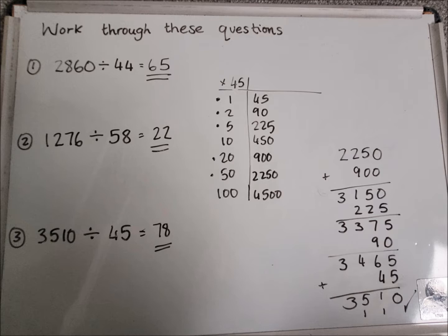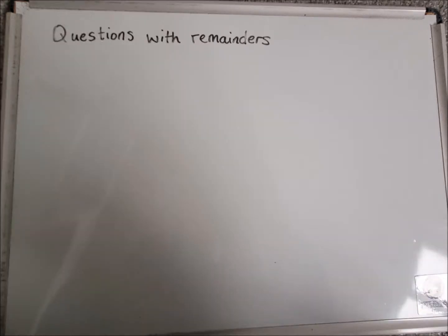So the next level to this would be working through questions that have remainders. If you have managed to complete the last three successfully, I can recommend that you go on ahead to the remainders section. If you're a bit unsure about the first part of the video, maybe not go into remainders just yet. You can message me on Teams and I'll be able to give you some more examples without remainders to work through first. But if you manage to get the first three correct, then we can fire on with some remainders questions.